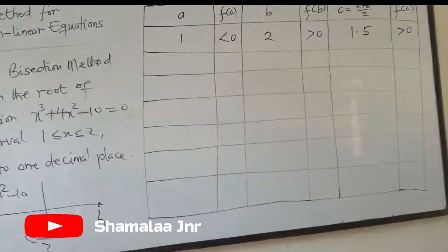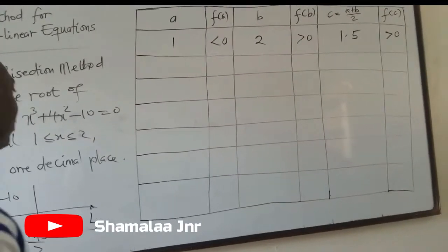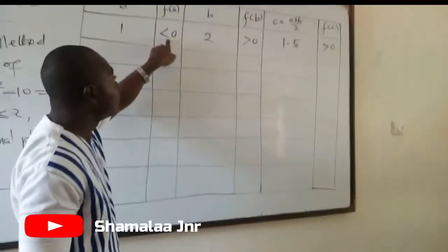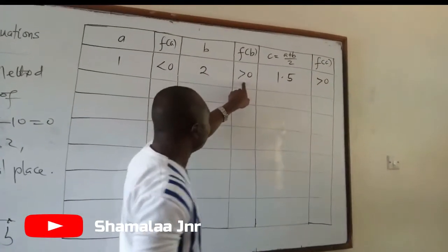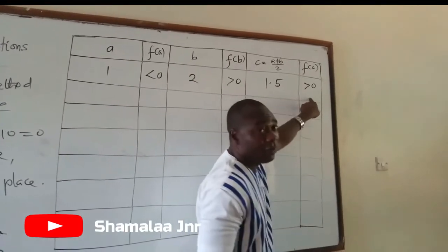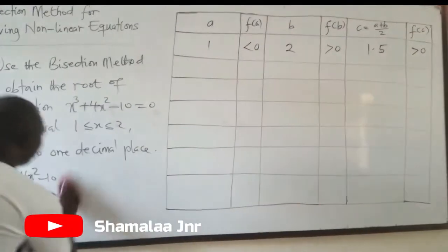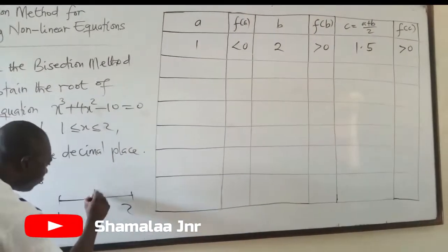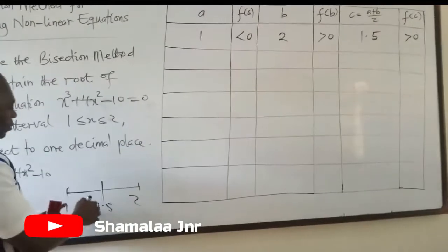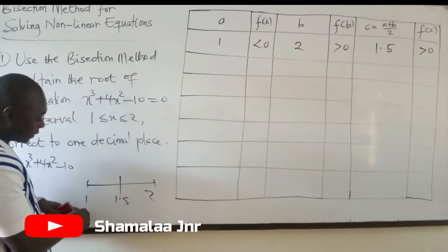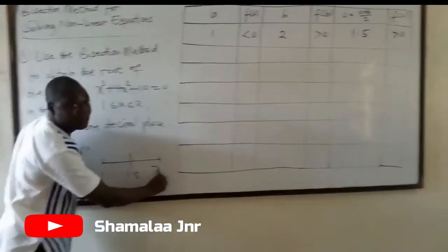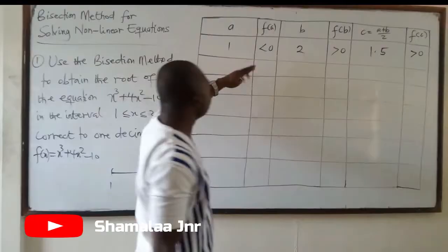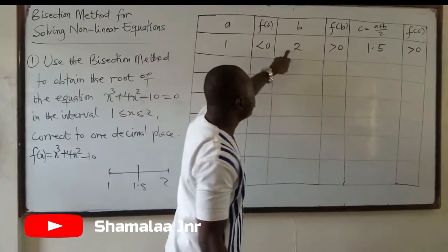Now how do you continue? The functional value of 1 gave us something less than 0, the functional value of 2 gave us something greater than 0, and the functional value of 1.5 is greater than 0. You are going to replace either 1 or 2 with 1.5 — so which one do you replace?